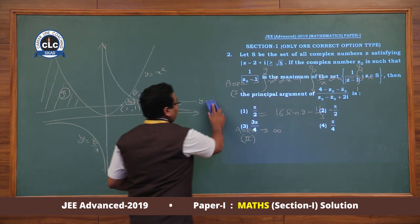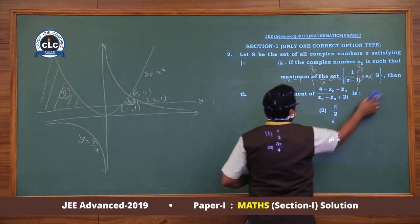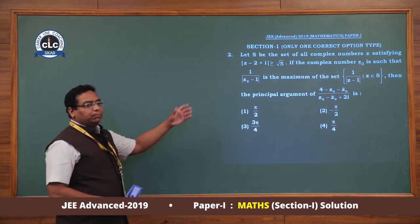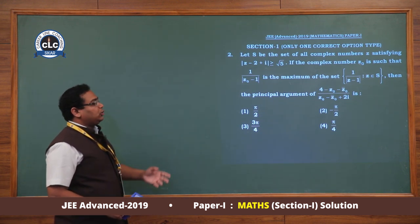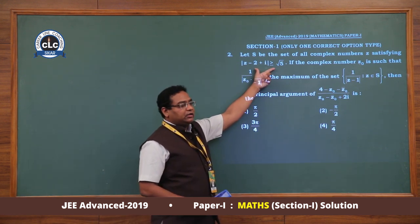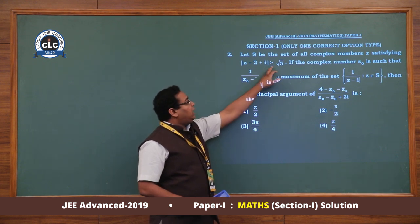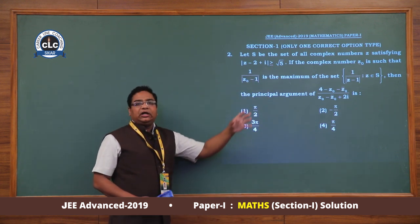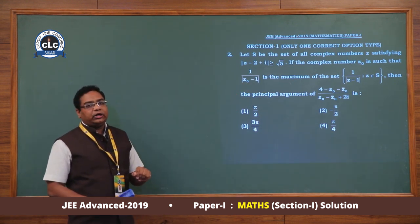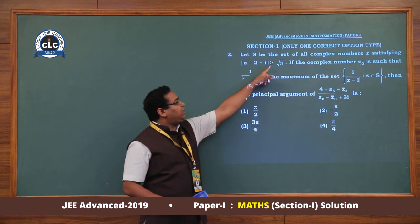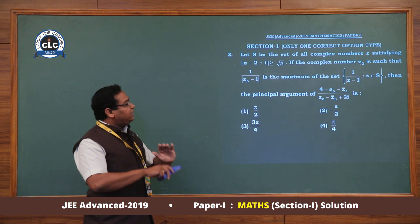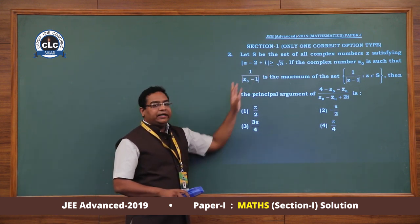Next, question number 2 is a complex number question. We are given a complex number satisfying an inequality. If it were equal to √5, this equation would represent a circle with center (2, −1) and radius √5. Since greater than or equal to is given, this is the exterior of the circle having center (2, −1) and radius √5.